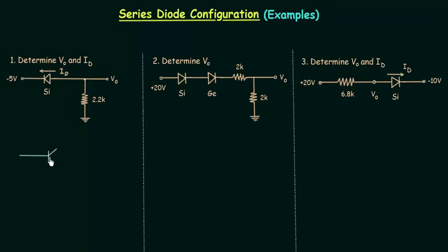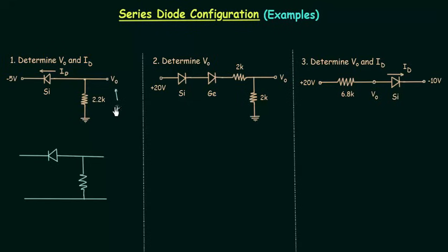We are using a silicon diode, so the barrier potential is equal to 0.7V. 2.2K Ohm is the value of resistance. V0 is the voltage across this resistance and we have to find out the polarity of V0 — V0 is positive in this circuit. So I will connect the positive terminal of V0 to this node and the negative terminal of V0 to this node.